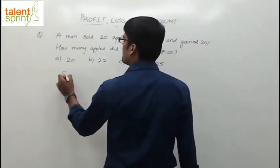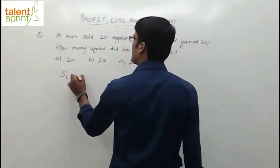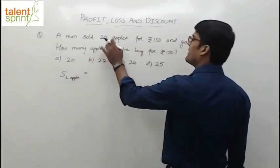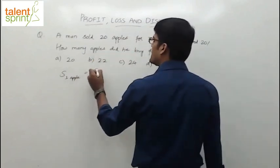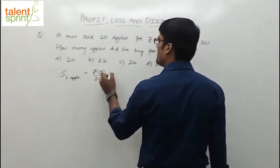See, what is the selling price of each apple? Selling price of one apple - he has sold 20 apples for Rs.100, so selling price of each apple will be Rs.100 by 20, which is Rs.5.